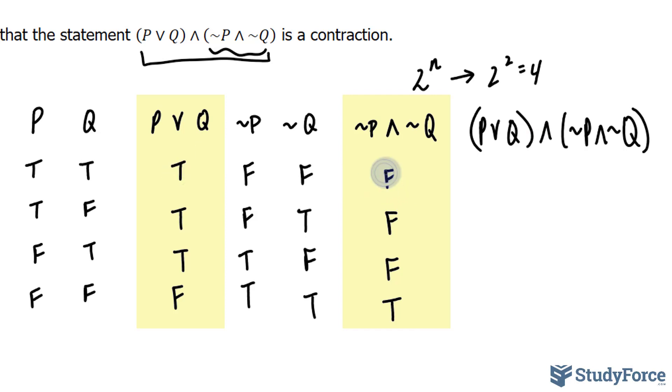So this is an and statement. We are looking for a true here and a true here. This is true, that's false, so this is false. That's true, that's false, so this is false. True, false, that means that's false. And unfortunately, we have a false and a true, so that is also false.